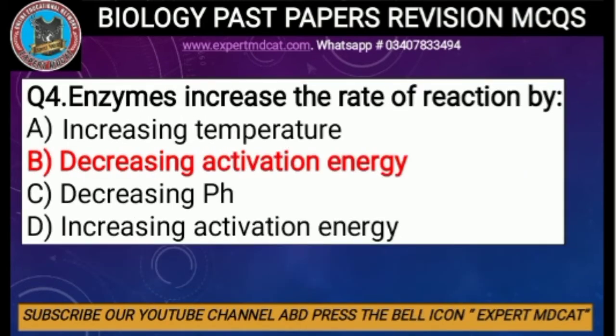Question number four: enzymes increase the rate of reaction by — A) increasing temperature, B) decreasing activation energy, C) decreasing pH, D) increasing activation energy. This is a very important characteristic of enzymes. Enzymes increase the rate of reaction by decreasing the activation energy — that is, the amount of energy needed to start the reaction. The correct option is B, decreasing activation energy.